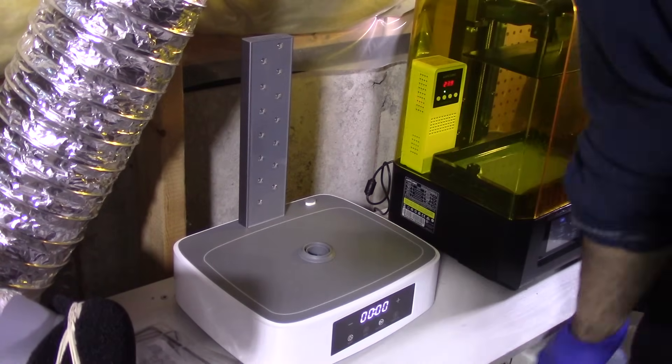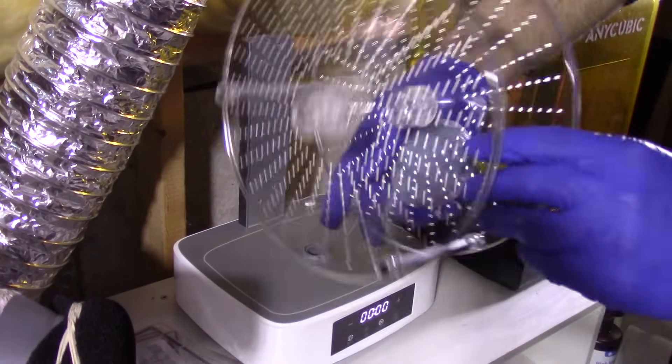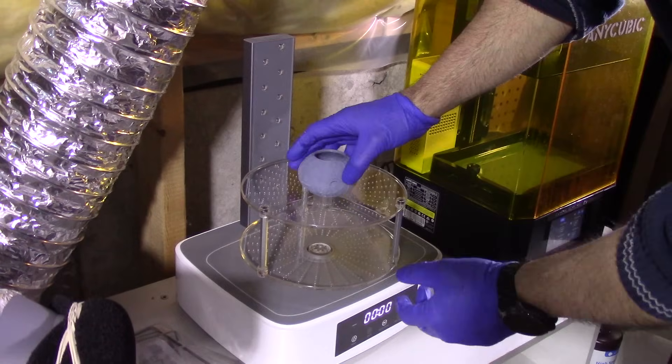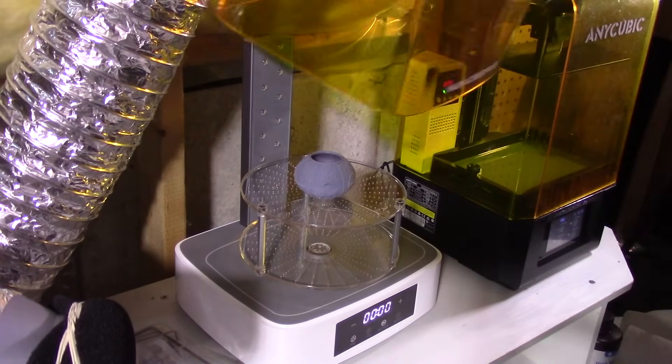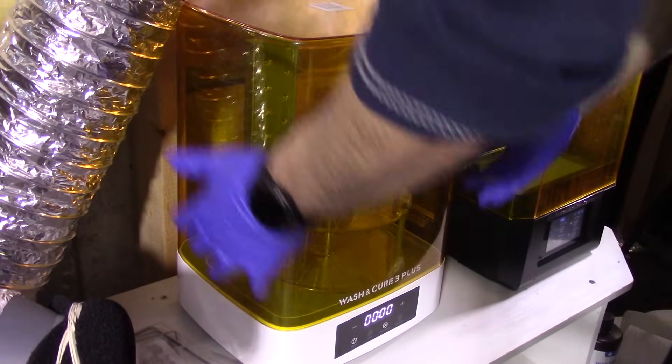So, there you have it. That's it for the unboxing of the wash and cure station 3.0, the Anycubic M5S Pro, some resin, and the screen protectors. I also included the initial setup and the first test print.